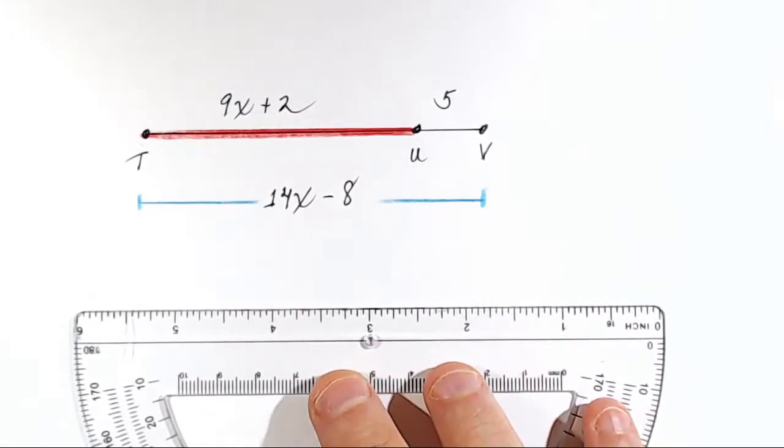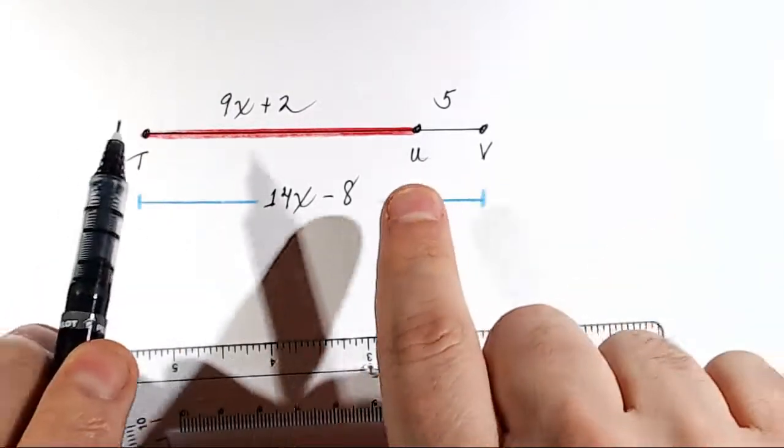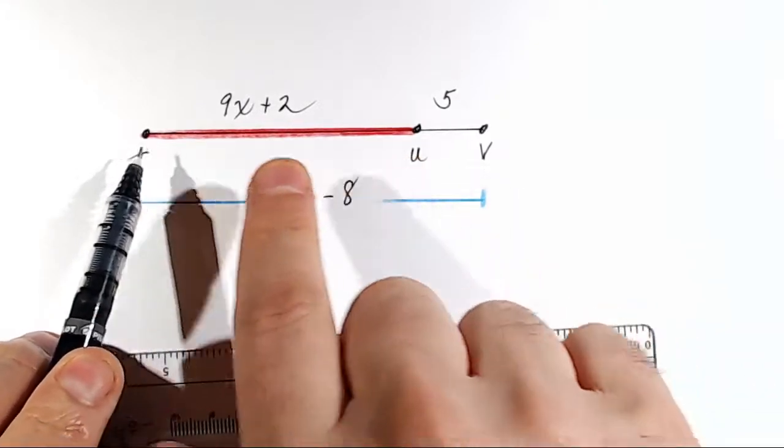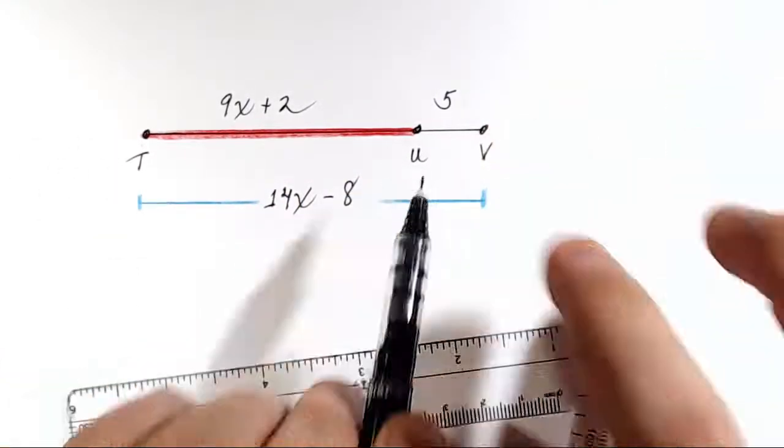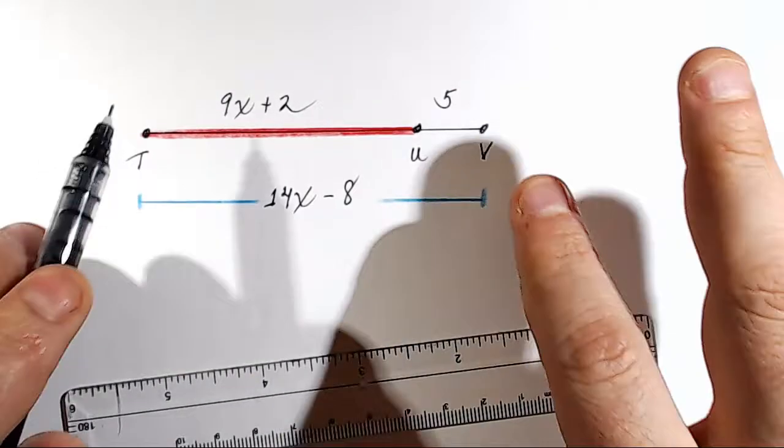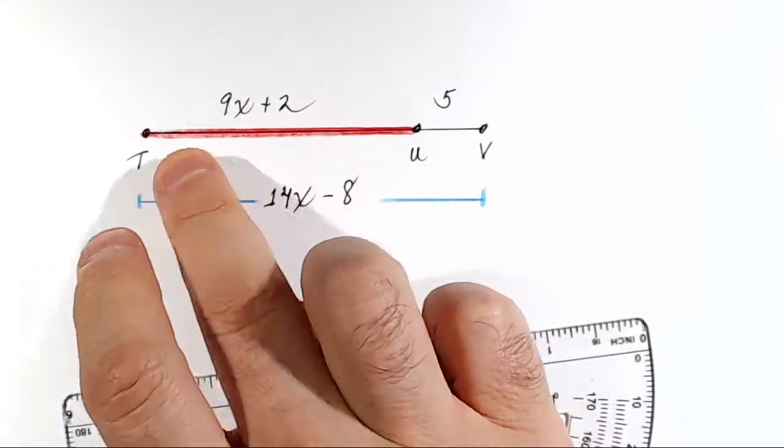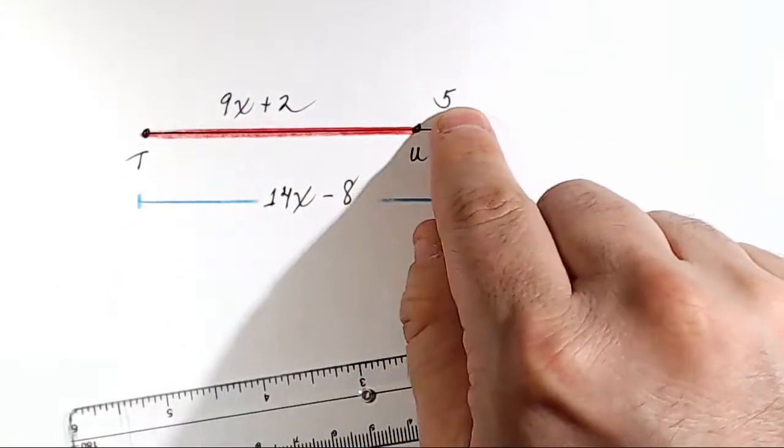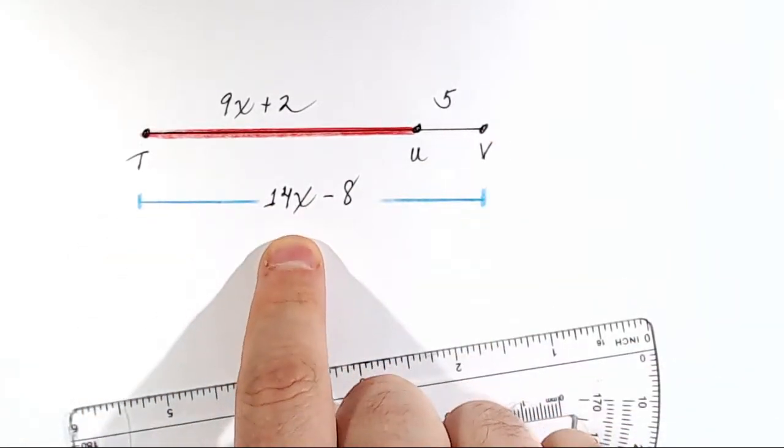Okay, remember the segment addition postulate. It says that if you have a total segment broken up into two smaller segments, which we have - TV broken up into segment TU and little tiny segment UV - if we want to know what the total distance is, we just add the segments together. In this case, we'll add 9x plus 2 plus 5, and we'll set that equal to the total distance, which is given as 14x minus 8.